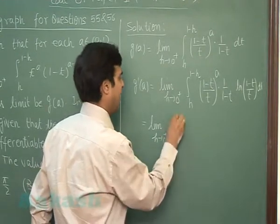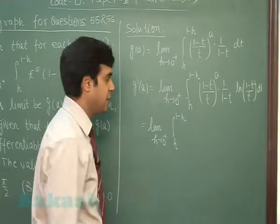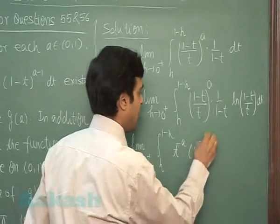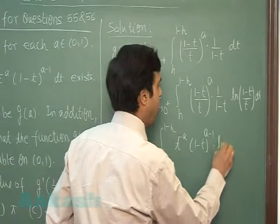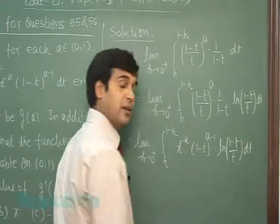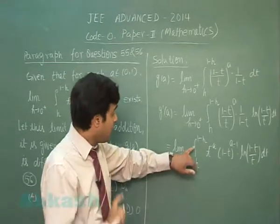Or limit h approaching 0+, let's rewrite in the original given format: that is t^(-a)(1-t)^(a-1) log((1-t)/t) dt. Correct.